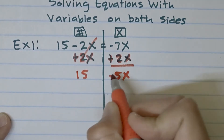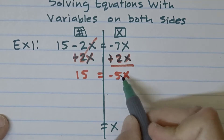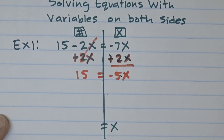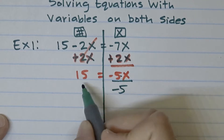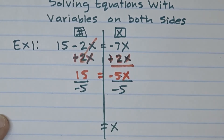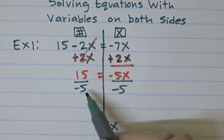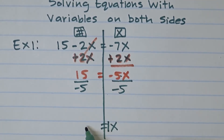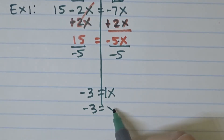Adding 2x to both sides eliminates the -2x, leaving negative 5x on the right and 15 on the left. To get x by itself, we divide both sides by negative 5. Negative 5 divided by negative 5 is 1, and 15 divided by negative 5 is negative 3. So x equals negative 3.